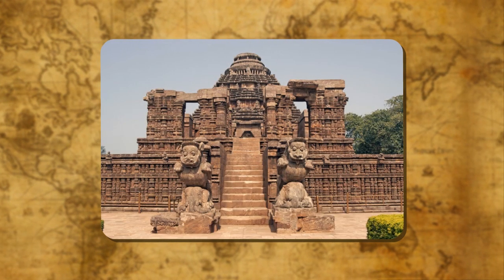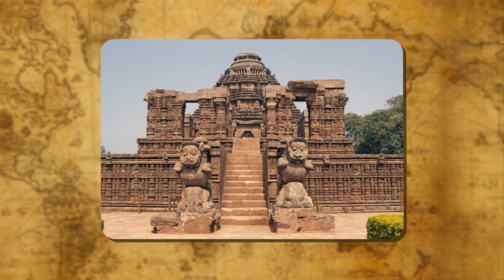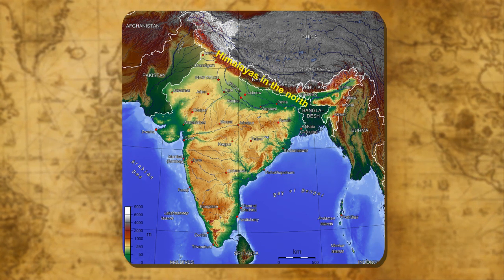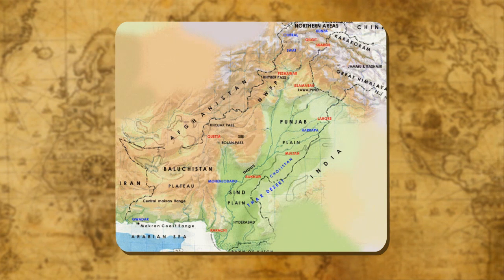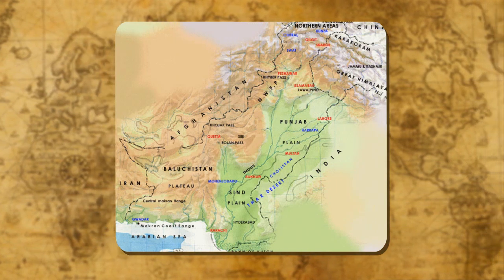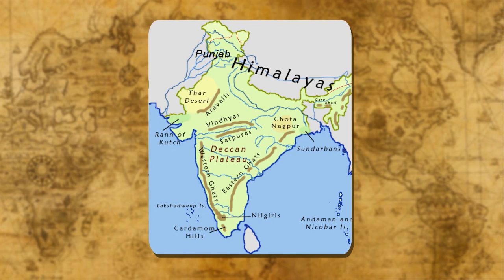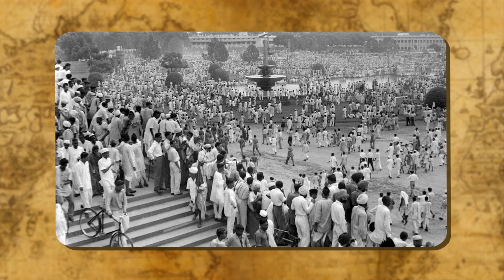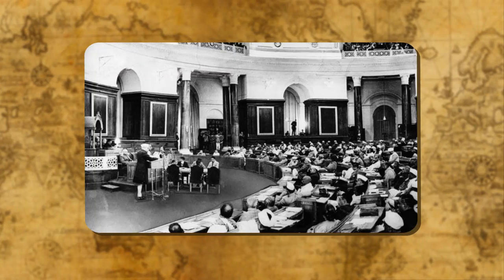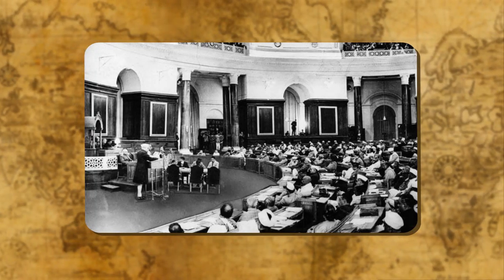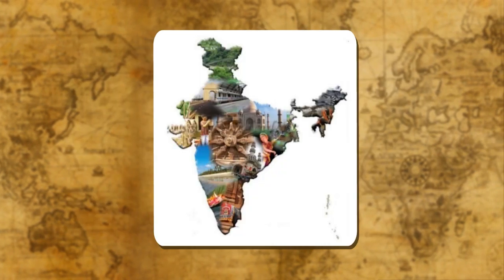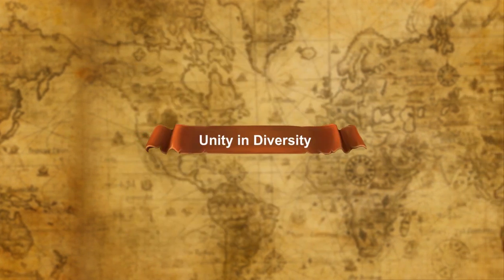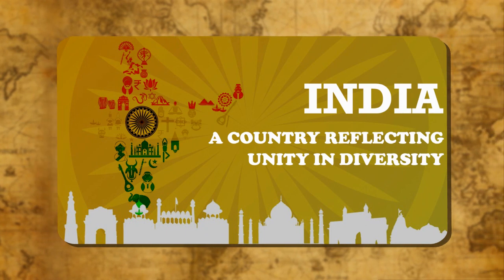In ancient India, the country remained isolated from others due to geographical conditions. Natural boundaries separated it from the rest of Asia — the Himalayas in the north, the Shan hills in the northeast, the Sulaiman range and other mountains in the northwest, and the Eastern and Western Ghats in the south kept India as a separate unit. After achieving independence, India as a whole has been governed by the same laws and constitution, establishing political and geographical unity.